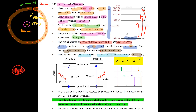If an electron absorbs a photon of energy ΔE, it will jump from a lower energy level, say E1, to a higher energy level E2. Looking at the diagram, the electron is at the ground state, it absorbs a photon, and subsequently jumps up to a higher level. The important thing to note is that the photon absorbed must have energy equal to the difference in your electron energy levels.